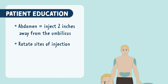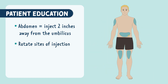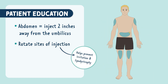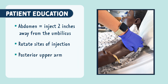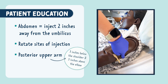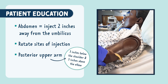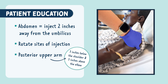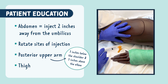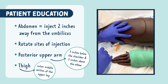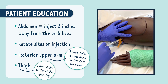You also want to rotate the sites of injection to prevent something called lipodystrophy — irritation and damage to the tissue due to injecting in the same spot. For the back of the upper arm, aim for a spot about 3 inches below the shoulder and 3 inches above the elbow. For the thigh, use the outer middle section of the upper leg.